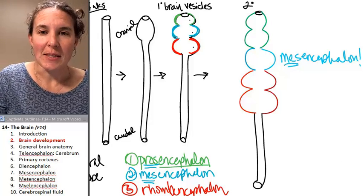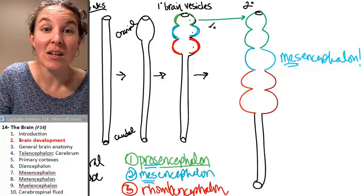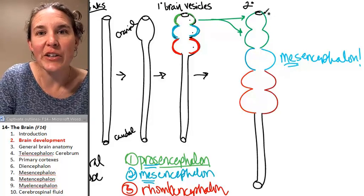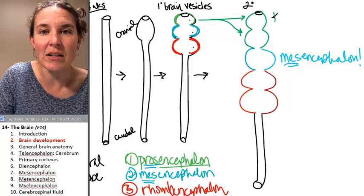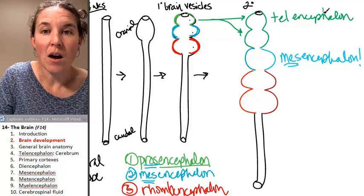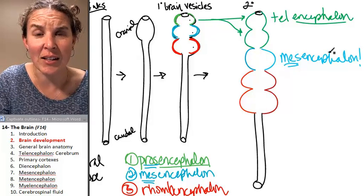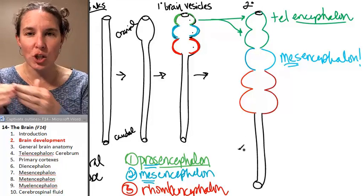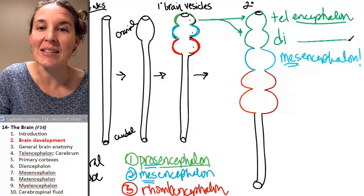And then the prosencephalon gives rise to two secondary brain vesicles. The most cranial, the most superior in my neural tube is called the telencephalon. But the prosencephalon doesn't just become telencephalon. It also becomes diencephalon.